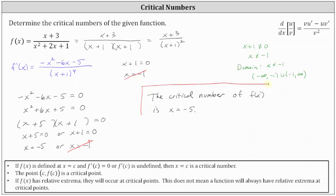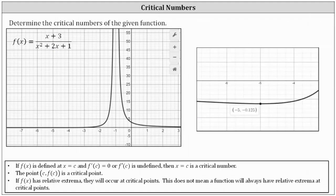The reason we care about critical numbers is that if f(x) has any relative extrema, they will occur at critical numbers. Looking at the graph on the left, the point at x = -5 does not immediately appear to be a relative extrema — remember, a critical number doesn't always guarantee one. But zooming in on the function around x = -5, we can see it is a low point on the graph, and therefore f(x) does have a relative minimum at x = -5.